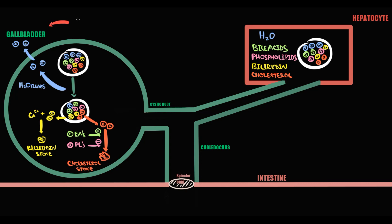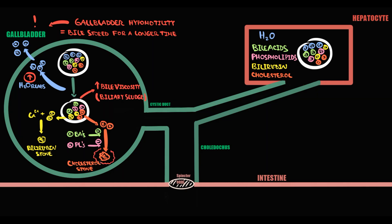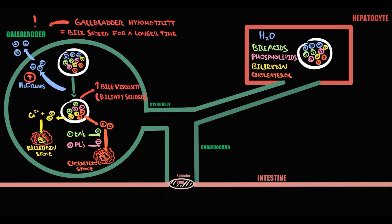The common risk factor that increases formation of both cholesterol and bilirubin gallstones is gallbladder hypomotility. With hypomotility, the gallbladder stores bile for a longer period of time, and as a result more water is absorbed. Bile becomes extremely viscous — this viscous bile we call biliary sludge. The higher the concentration of cholesterol in the bile, the higher the risk of cholesterol gallstone formation. The higher the concentration of bilirubin in the bile, the higher the risk of bilirubin stone formation. Such stones can cause obstruction of the cystic duct or in the common bile duct.